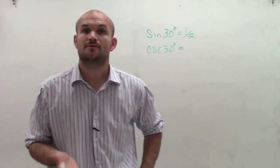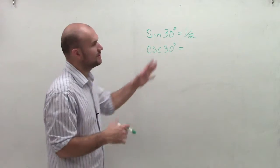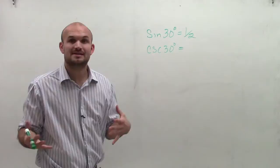How am I going to determine what the cosecant of 30 degrees is? So there's a couple things we need to remember about this. First of all, we need to understand and remember how cosecant and sine are related.